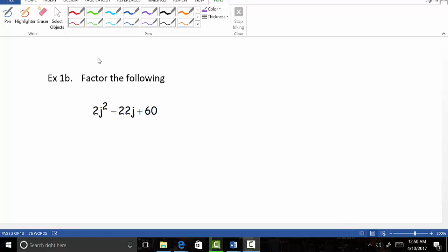Here we are at example 1B from our 4.3, 4.47. Notice we're asked to factor the following. Just looking at this, we notice that we have a trinomial here and that there are some things in common, that they all three share that common factor 2.